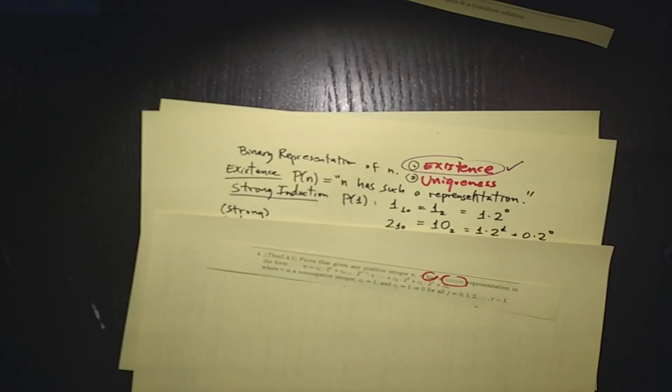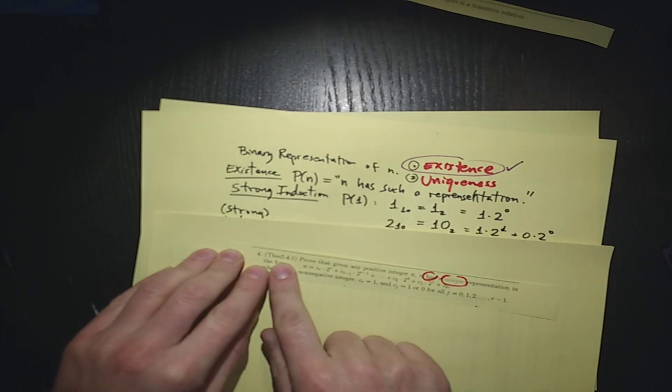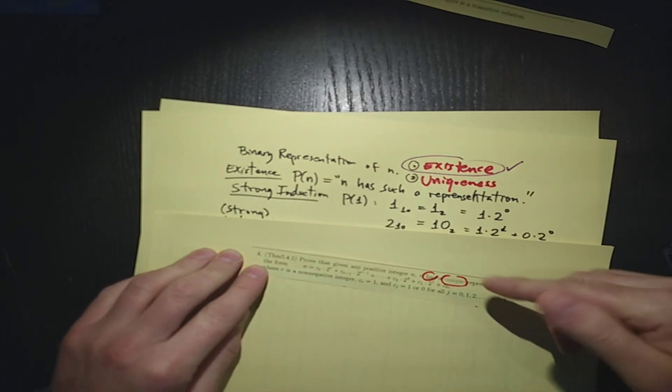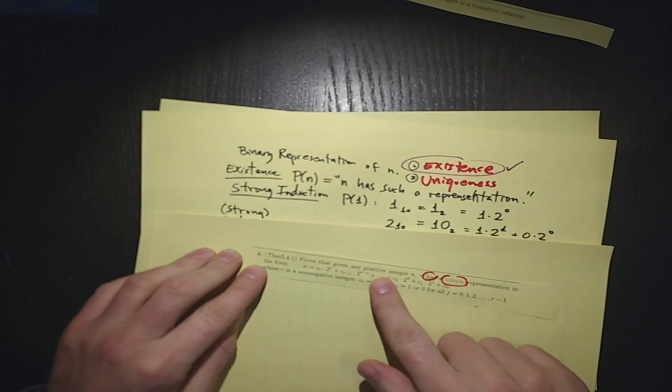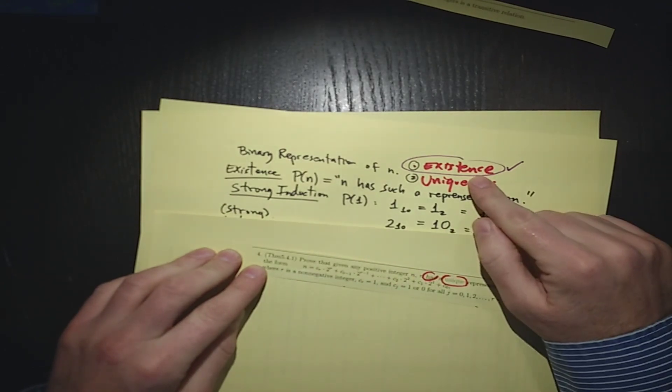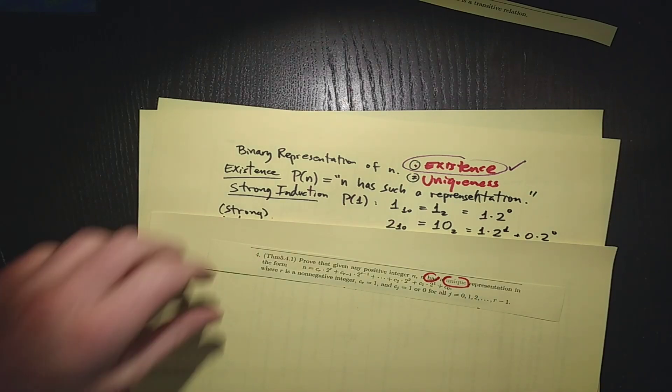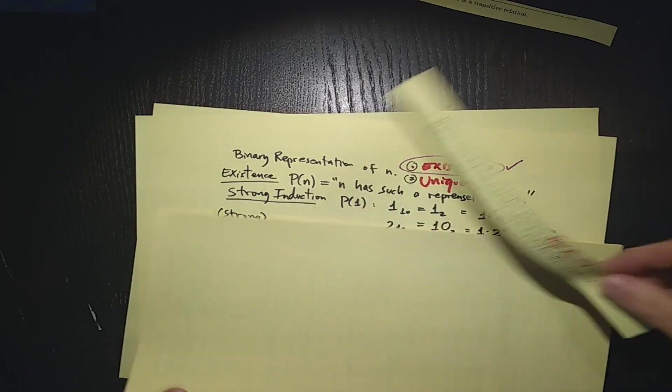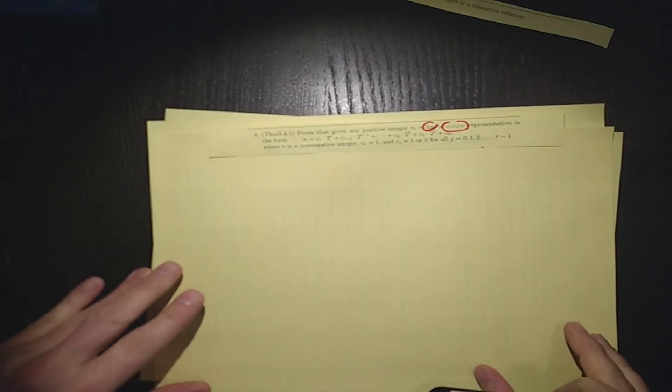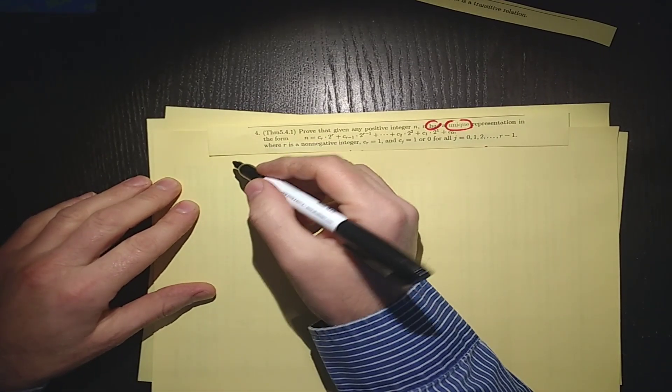Okay, we're back. We're going to prove theorem 5.4.1. Before we proved that each positive integer n does have a binary representation, and now we'd like to show that it's unique. So let's get some space here. We're going to show it's unique, and this is not an induction proof, but what we can do, let's do a proof by contradiction.